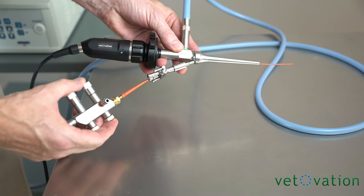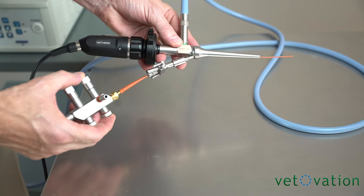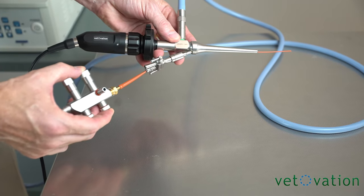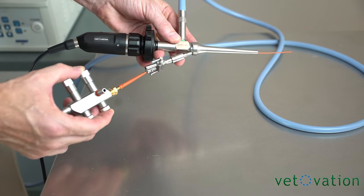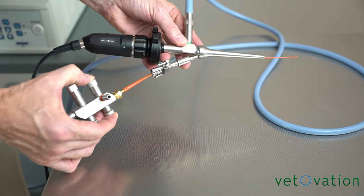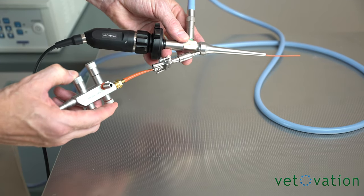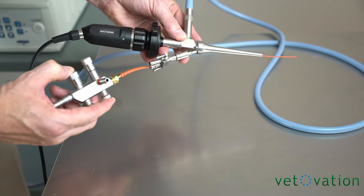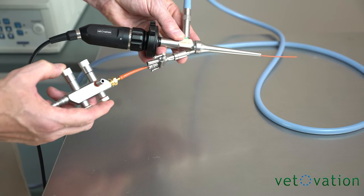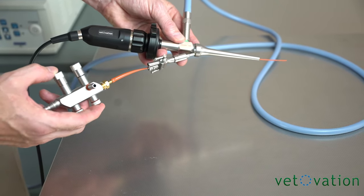Enabling suction and irrigation during video otoscopy is very beneficial. So with this suction irrigation handle, you can attach it to an IV bag with a pressure cuff and then your floor suction canister. Depressing this button will give you irrigation into the patient. Depressing this button will suck that fluid back out. Most people use a standard five French red rubber catheter to introduce this down the lumen of your scope.